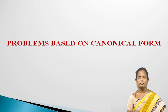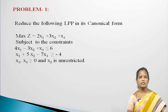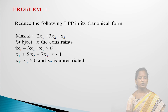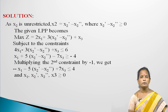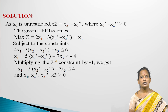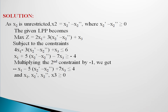Problems based on canonical form. Problem 1: Express the following LPP in its canonical form. Maximize Z equal to 2x1 plus 3x2 plus x3, subject to: 4x1 minus 3x2 plus x3 less than or equal to 6; x1 plus 5x2 minus 7x3 greater than or equal to minus 4; x1, x3 greater than or equal to 0 and x2 is unrestricted in sign. Solution: Since x2 is unrestricted, let x2 equal x2' minus x2'', where x2', x2'' greater than or equal to 0. Substituting and multiplying the second constraint by minus 1 gives: minus x1 minus 5(x2' minus x2'') plus 7x3 less than or equal to 4, with all variables greater than or equal to 0.